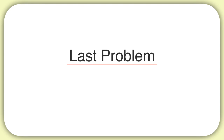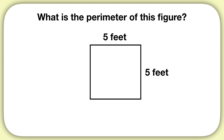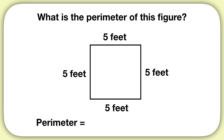Now here's your last problem for this video. What is the perimeter of this figure? First we'll fill in the missing side lengths: 5 feet and 5 feet. Then to find perimeter, we'll just add them all up: 5 plus 5 plus 5 plus 5. When you do this, you get a perimeter of 20 feet.